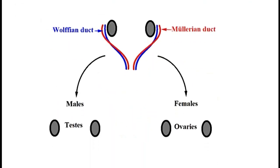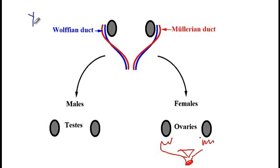By default, gonads will form the ovaries and the Müllerian duct will form the oviduct, the uterus, cervix, and the upper portion of the vaginal canal. In males, however, there is a Y chromosome which carries the SRY gene that produces the testes-determining factor, which acts on the gonads and makes them form the testes.